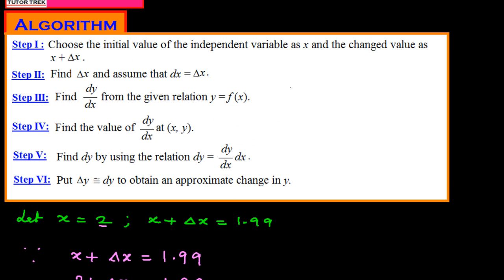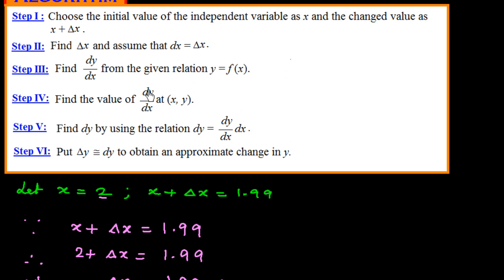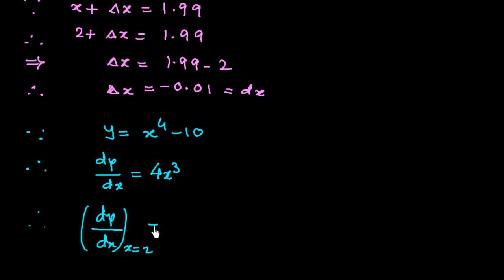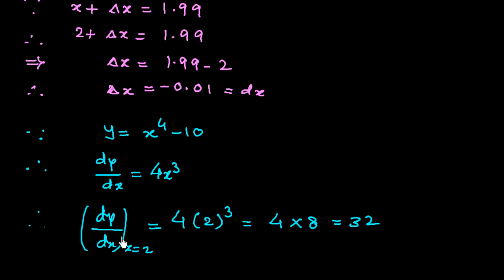Step 4: find the value of dy/dx at the given point. We need to evaluate at x = 2. Therefore, dy/dx at x = 2 equals 4 × (2³) = 4 × 8 = 32.